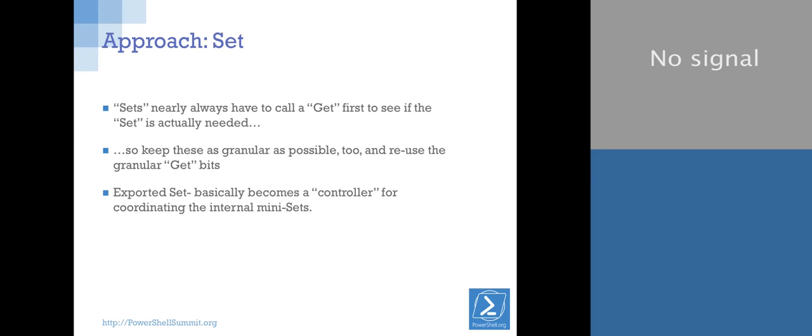Your approach for set: you're nearly always going to have this calling a get first to see if it needs to do anything. You want to break your set into minis. Get thing number one, it's fine. Get thing number two, oh it's not fine, call set number two to mitigate it. Your sets also get broken out, making them very granular. How many of you, when you test DSC stuff, your target node is a virtual machine? Always make it a virtual machine for testing. You know why? One word, two syllables, rhymes with snapshot.